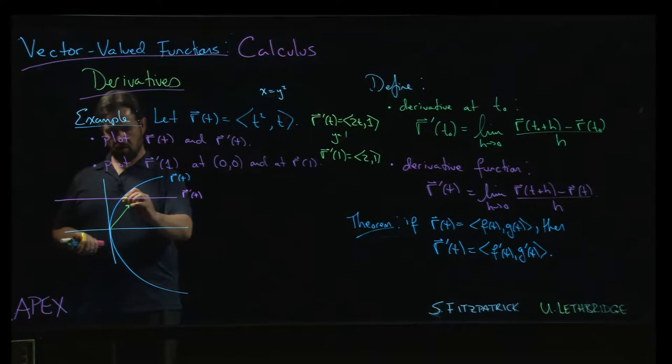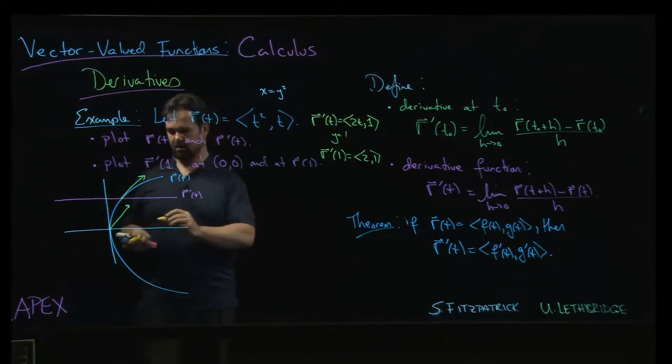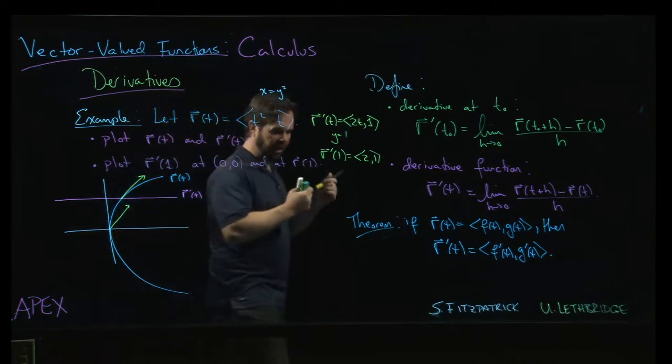Well, here we see that sort of tangent vector property, right? That it's going to go there. We get this vector which, you know, you can imagine the line in the direction of that vector through that point - it's tangent to the curve, right? So this notion of a tangent vector.